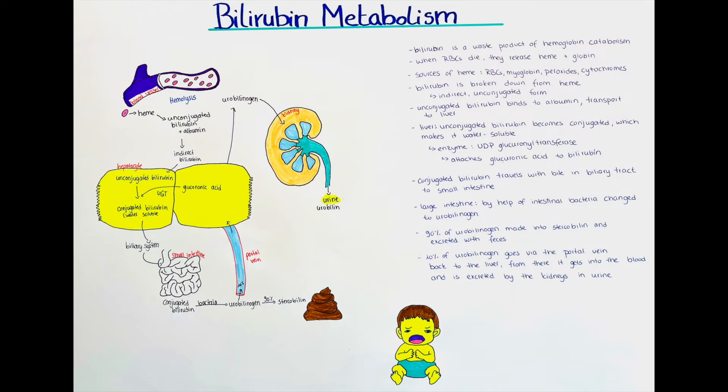Now that the bilirubin is in the liver, the liver will conjugate the bilirubin — it transforms unconjugated bilirubin into conjugated bilirubin. This makes the bilirubin more water-soluble, because conjugated, also known as direct, bilirubin is more water-soluble than unconjugated, also known as indirect, bilirubin.